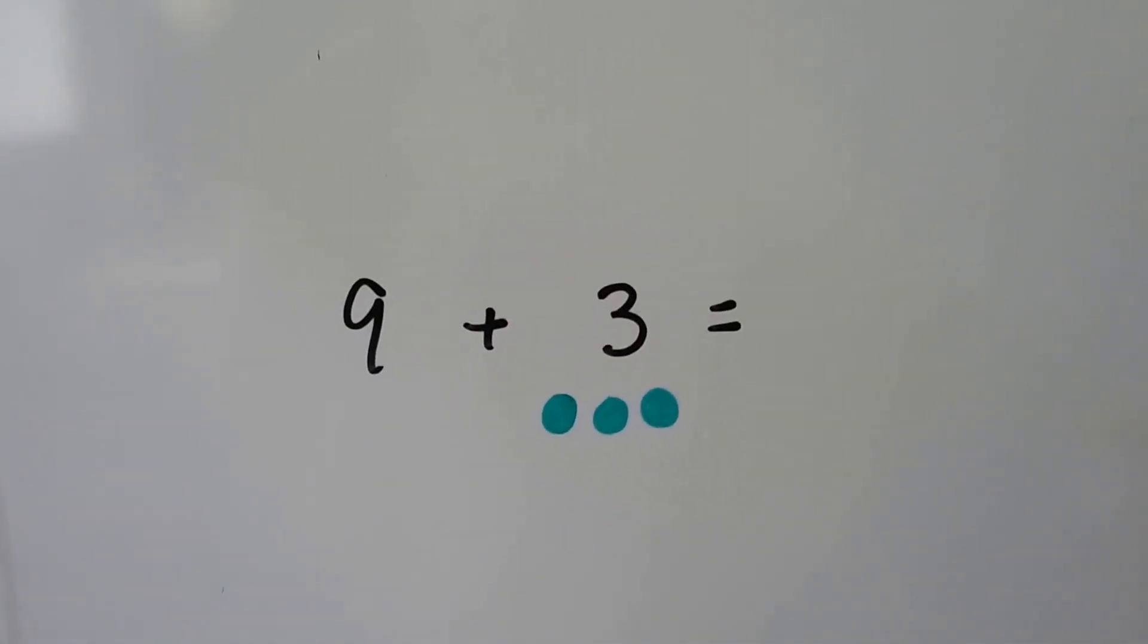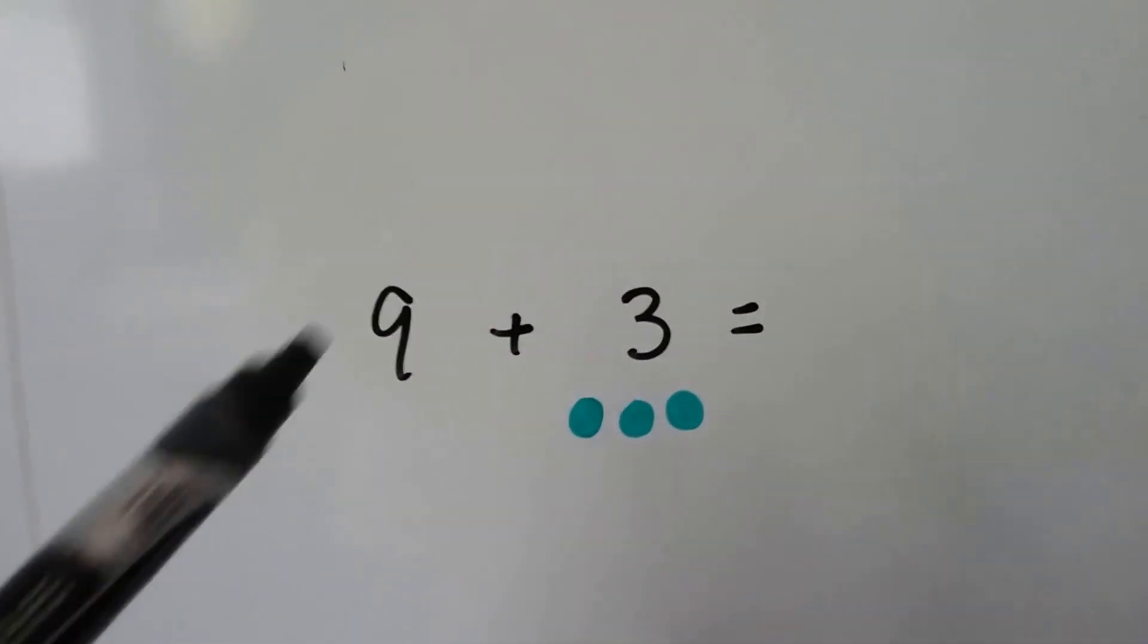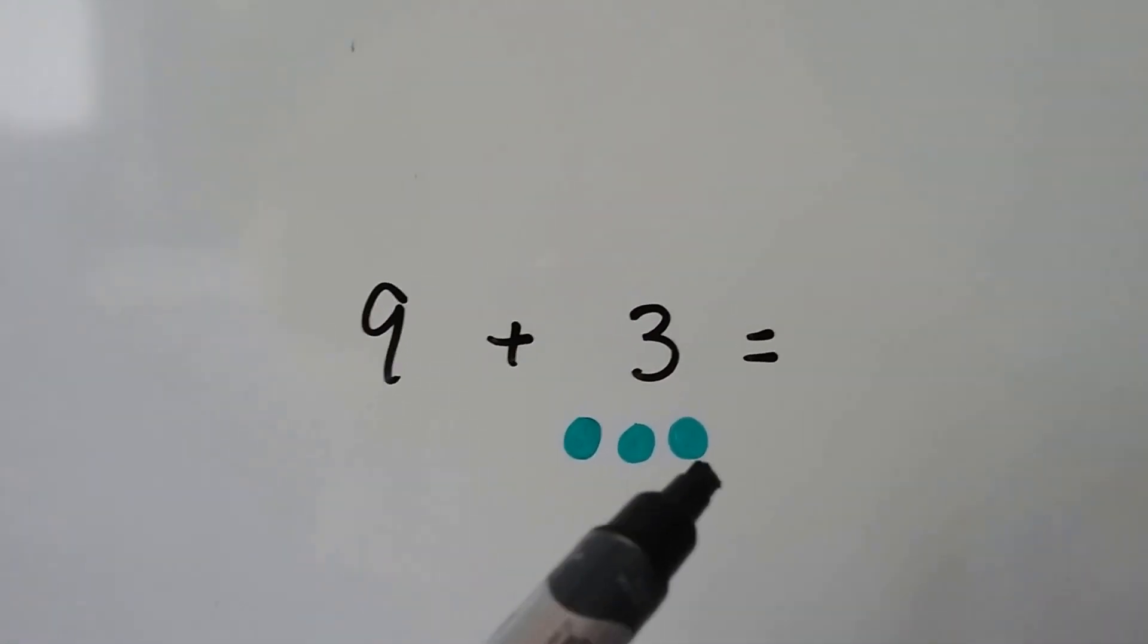9 plus 3. We're going to start at the 9 and count up: 9, 10, 11, 12.